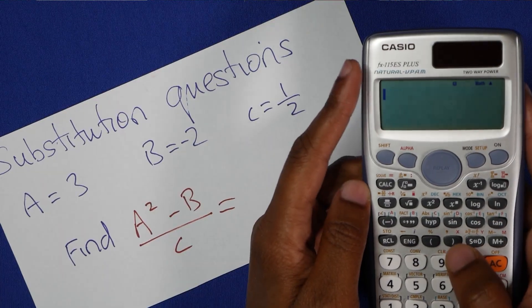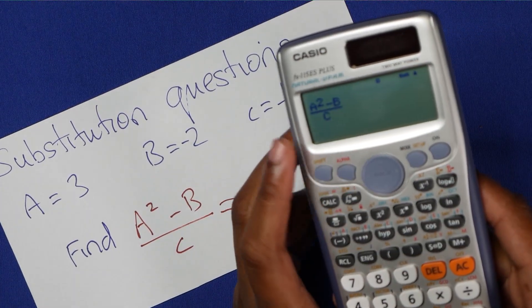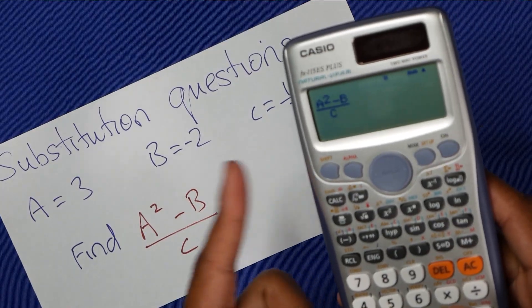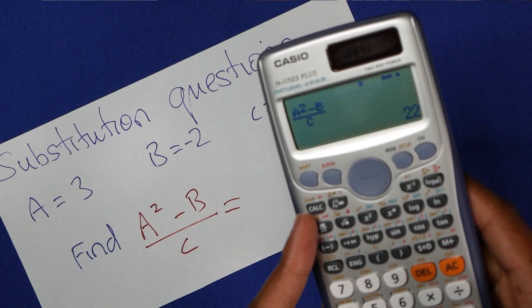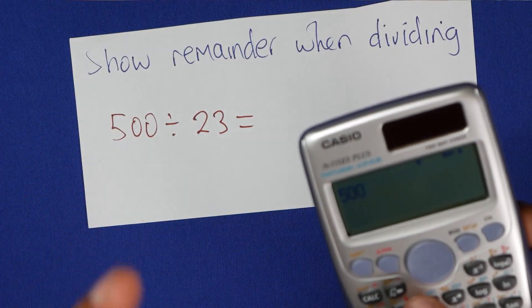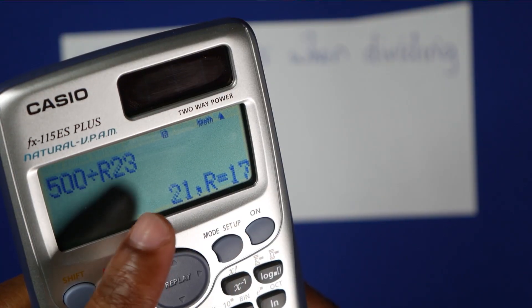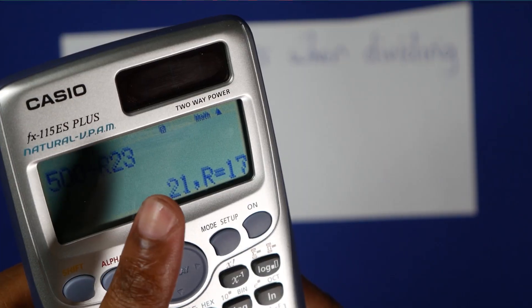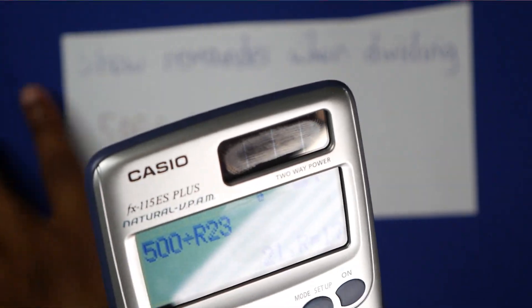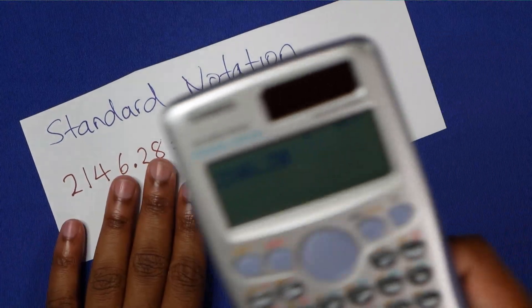Substitution questions have never been easier. It's a simple speeding up of your work, like showing the remainder when dividing. 500 divided by 23: 21 remainder 17. Scientific or standard notation.